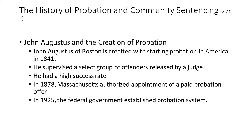In 1841, he attended police court to bail out a common drunk who was deemed his first unofficial probationer. The offender was ordered to appear in court three weeks later for sentencing. He returned to court a sober man, joined by Augustus. To the astonishment of all in attendance, the offender's appearance and demeanor had dramatically changed. Augustus thus began an 18-year career as a volunteer probation officer. Not all of the offenders he helped were alcohol abusers, nor were all prospective probationers taken under his wing.